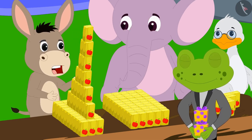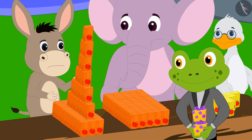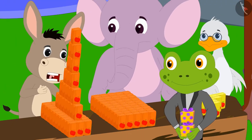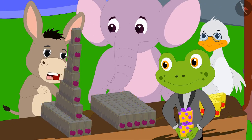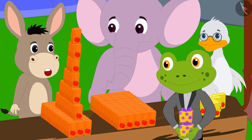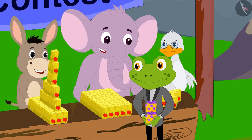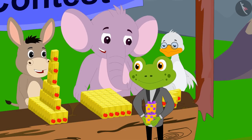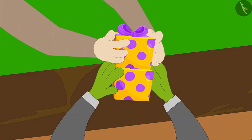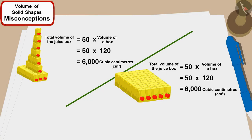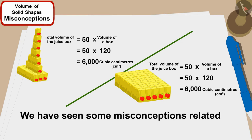Bola said: 'Oh, good — now I get it! Even though Appu's and my shapes look different, because we used the same number of boxes, the total volume of the juice boxes in our shapes is exactly the same.' The two friends understood the point and together happily shared the prize. Children, in this video we have seen some misconceptions related to volume of solid shapes.